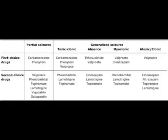For myoclonic seizures, the first line drug is valproate — I recently uploaded a video on valproate, go ahead and watch that. For atonic and clonic types of generalized seizures, valproate is also the first line drug. So remember: carbamazepine is first line for partial and tonic-clonic seizures.